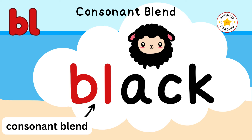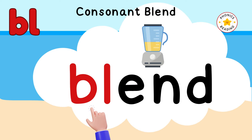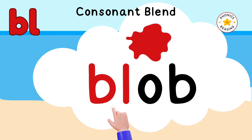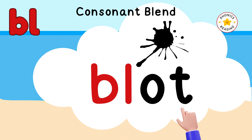BL is a consonant blend. In BL, we can hear both the B and L sounds clearly. You are watching Phonics Reading YouTube channel and we are learning consonant blends. Let's take a few more examples: BL as in blend — B, L, E, N, D — blend. BL as in blob — B, L, O, B — blob. BL as in blot — B, L, O, T — blot.